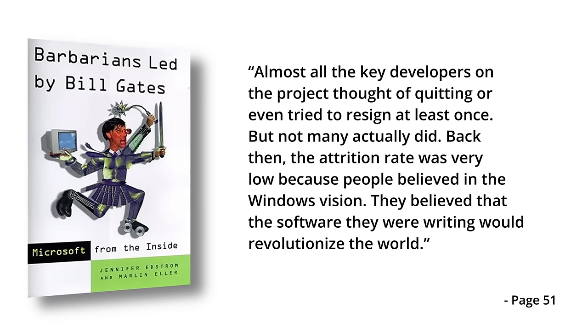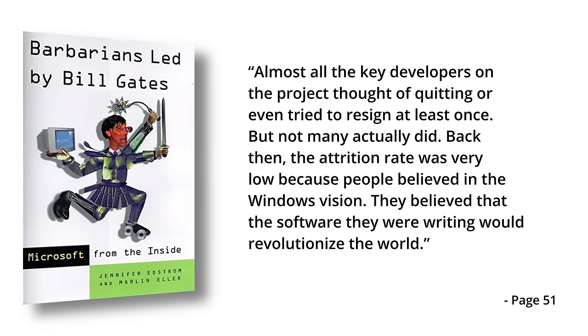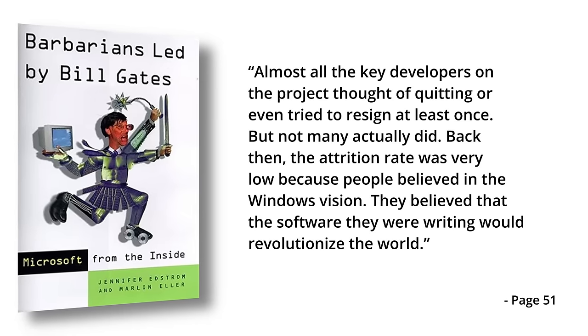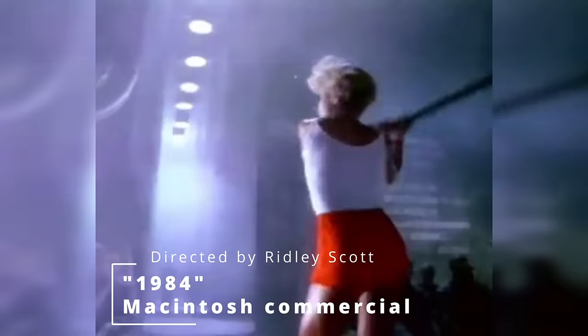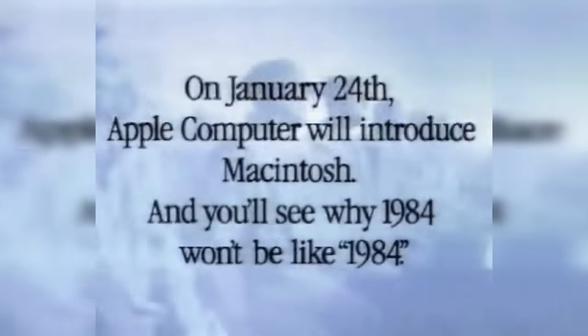The Windows development death march had started to majorly affect morale at Microsoft, with programmers no longer trying to get on the Windows team. Microsoft's application developers were also resisting working on Windows applications, preferring to focus on developing Macintosh applications instead. Somehow, the Windows team kept up their overall belief in the importance of the Windows project — though according to the book Barbarians Led by Bill Gates, almost all the key developers on the project thought of quitting or even tried to resign at least once. But not many actually did. Back then, the attrition rate was very low because people believed in the Windows vision — they believed the software they were building would revolutionize the world. But by this point, outside Microsoft's walls, the Macintosh hype was building to enormous levels, leaving little room for Microsoft's oft-delayed GUI.